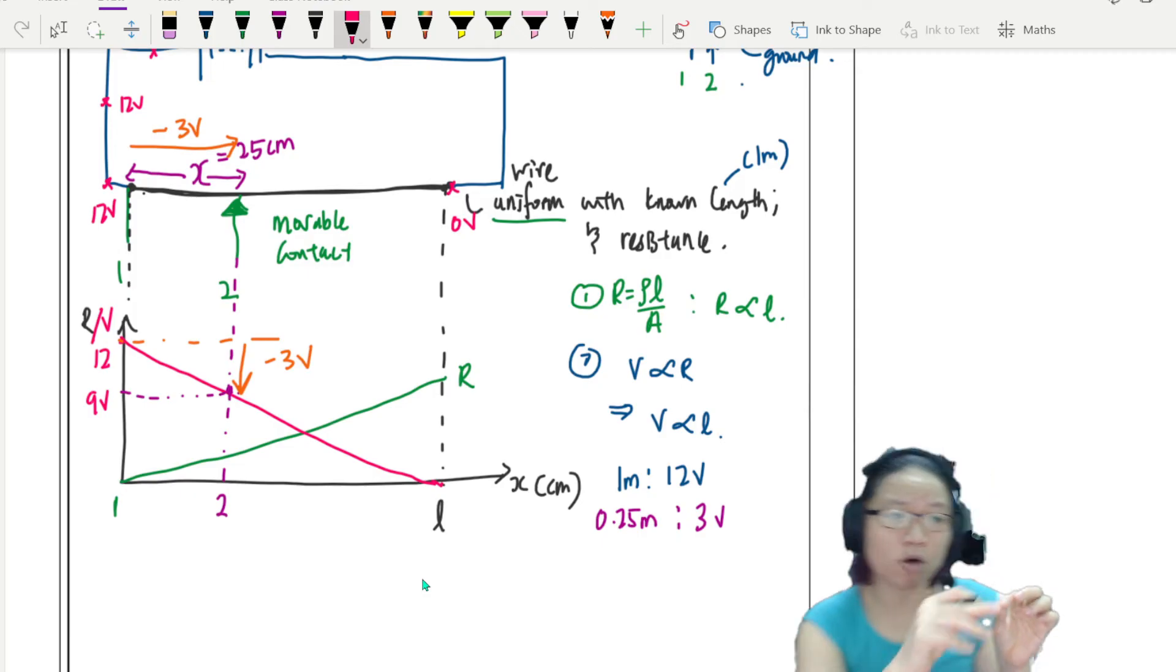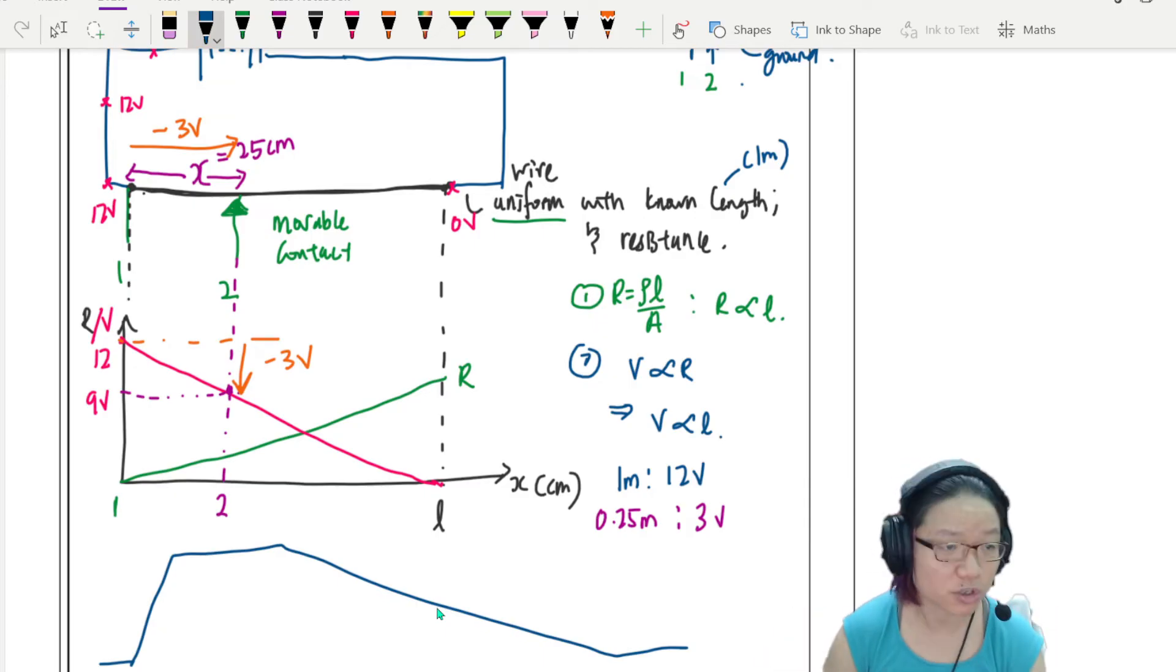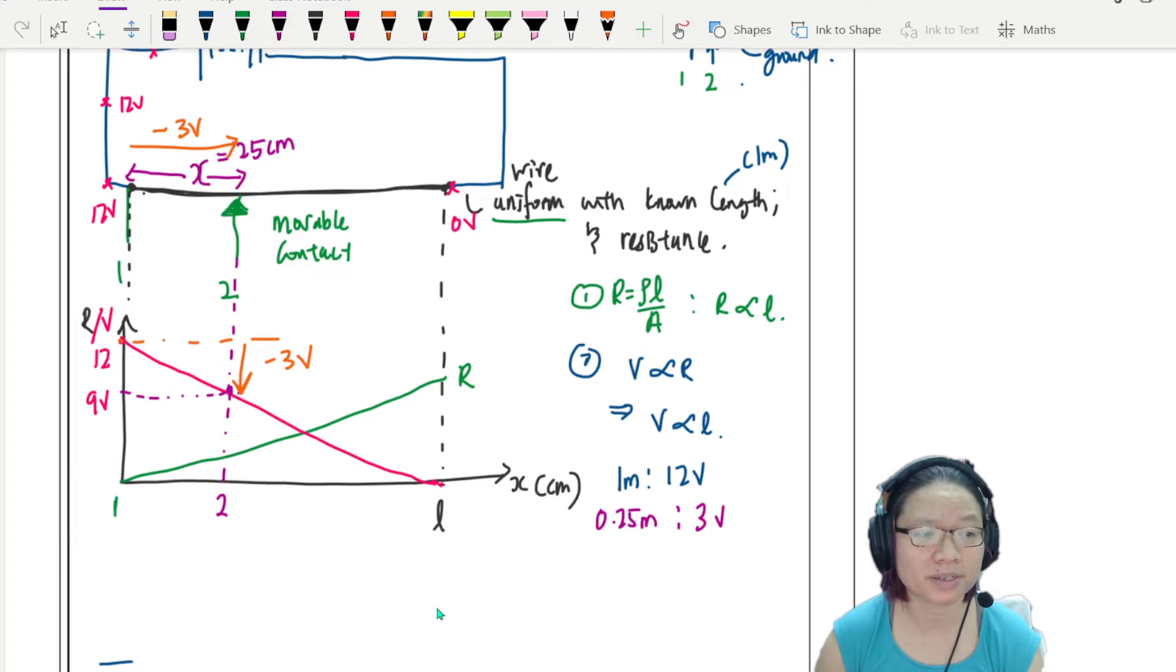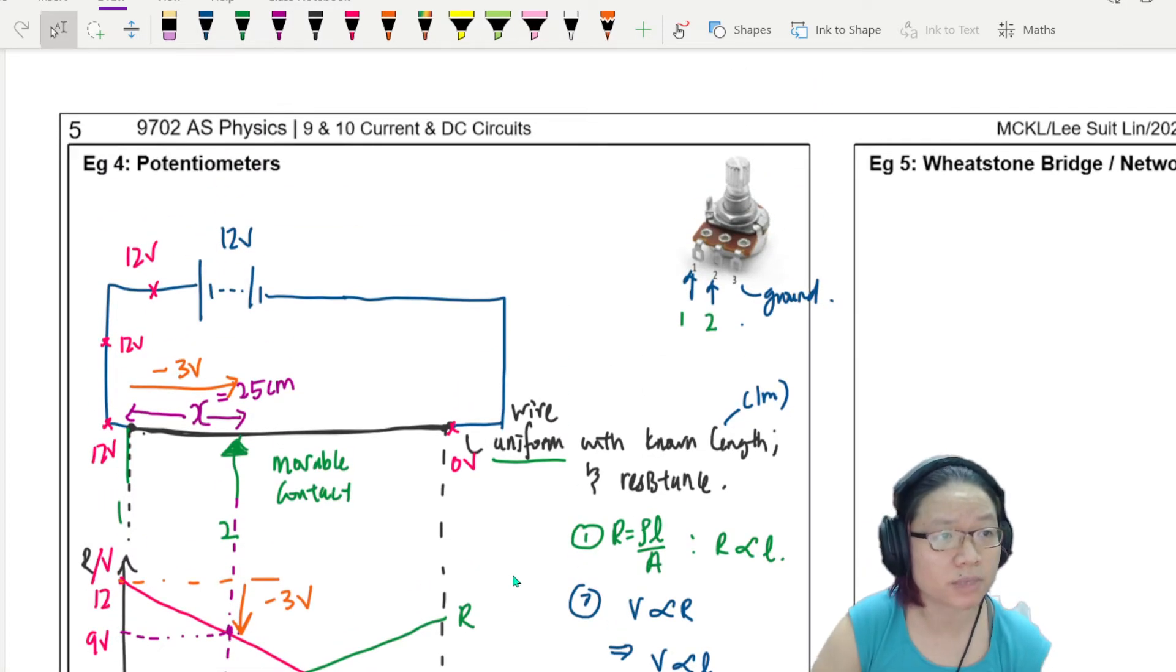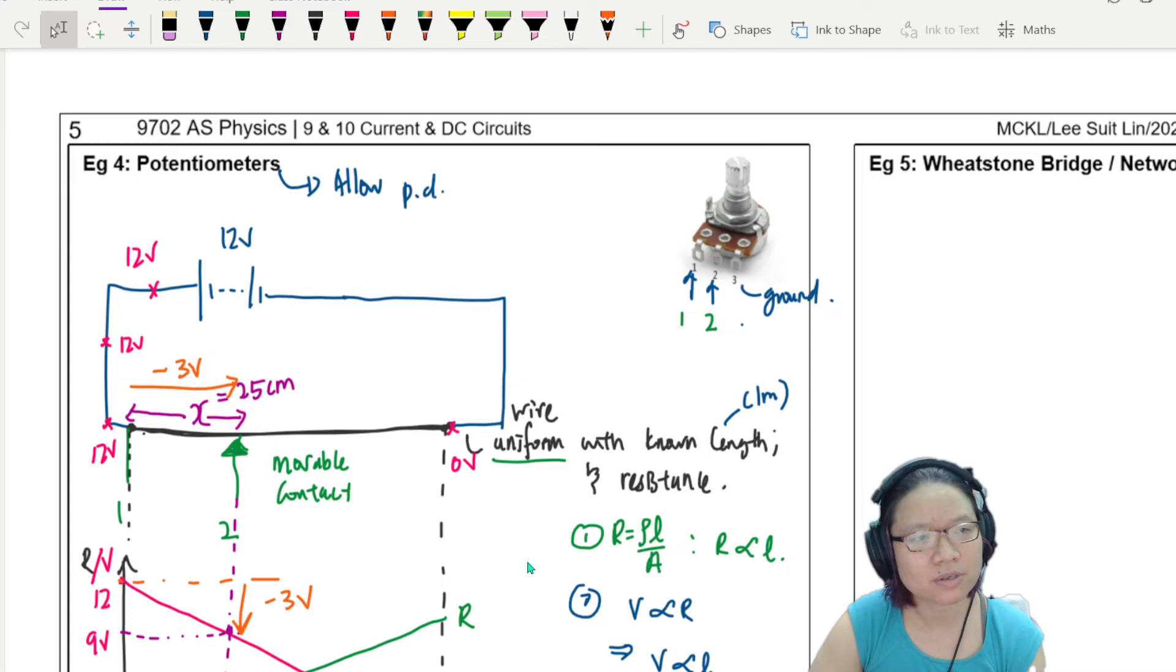Let's use a common example. Let's say now this length is one meter. So number two, since V is proportional to R, but R is proportional to L, I can say V is proportional to L. Meaning to say right now, if one meter, let's say this meter rule is one, the wire is, the known length here is one meter. It's 12 volt. And let's say this X here is, I don't know, 25 cm.